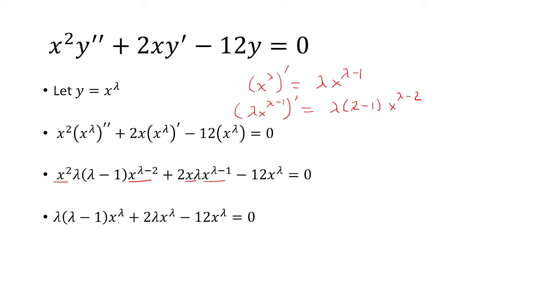And now notice that each term has an x to lambda factor. So we can pull that out. And inside the bracket, we have lambda times lambda minus 1, plus 2 times lambda minus 12.